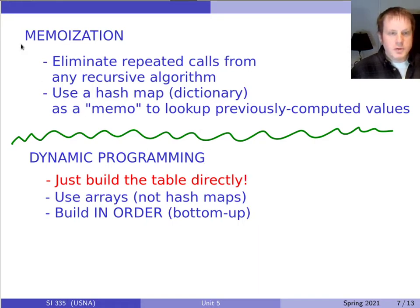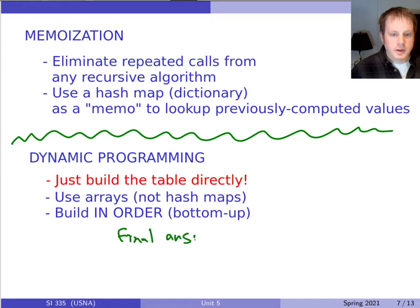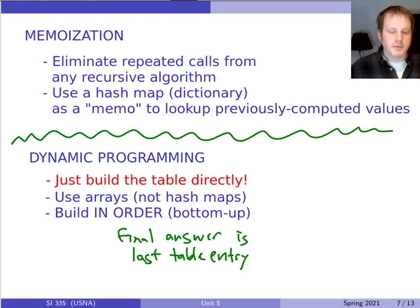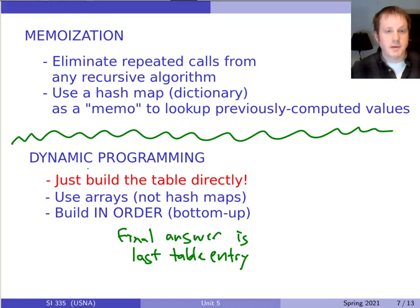So rather than saying we have this recursive algorithm and we're going to use a table to speed it up, in dynamic programming we say, let's just build that table. And when you build the table, the final answer is just the last table entry. So once we've built up the whole table, we just return the last thing in it. Let's look at a couple of examples we've already seen, but from the dynamic programming side.